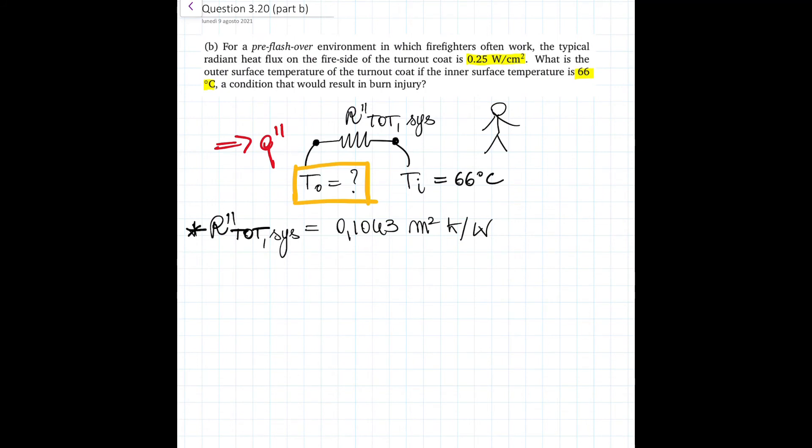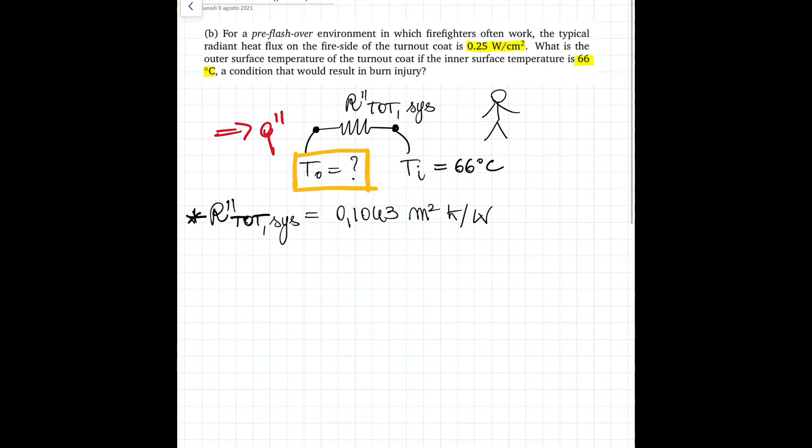Let's now solve question 3.20 part B. In this part of the question, we are given a specific heat flux at the outer surface of the firefighter's jacket, and we're also given the inner temperature experienced by the firefighter. Our aim in this part is actually to find the outer surface temperature of the whole system.